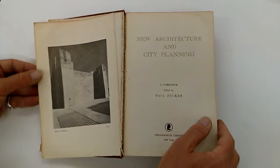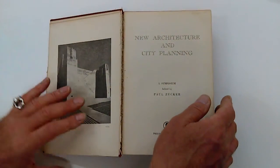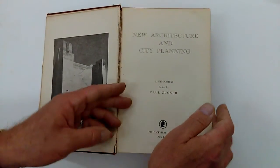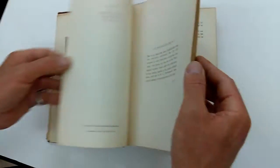Right, ladies and gentlemen, a dense and heavy expert book called New Architecture and City Planning, a symposium edited by Paul Zucker at the Philosophical Library New York, first edition, 1944.